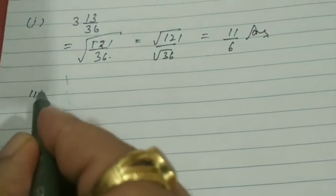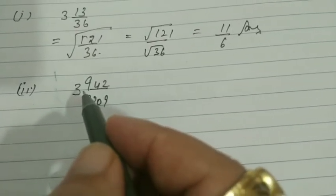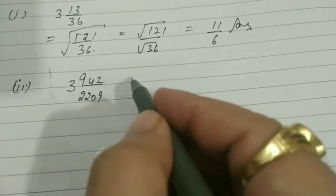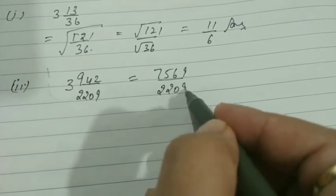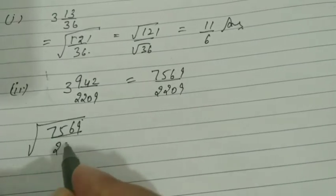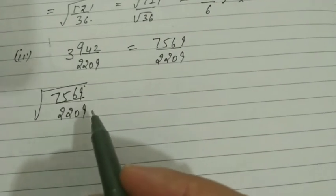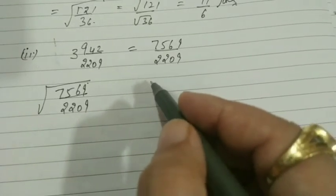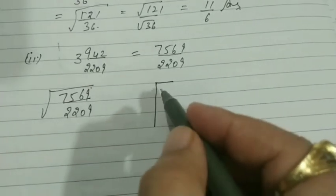Sum number 3, same path. Sum number 3 is 3 and 942/2209 (a mixed number). When converted to an improper fraction, we have 7,569 divided by 2,209. Now we will find the square root. We can find the root by two methods: prime factorization method and long division method. In this sum, I am going to find the square root using the long division method.